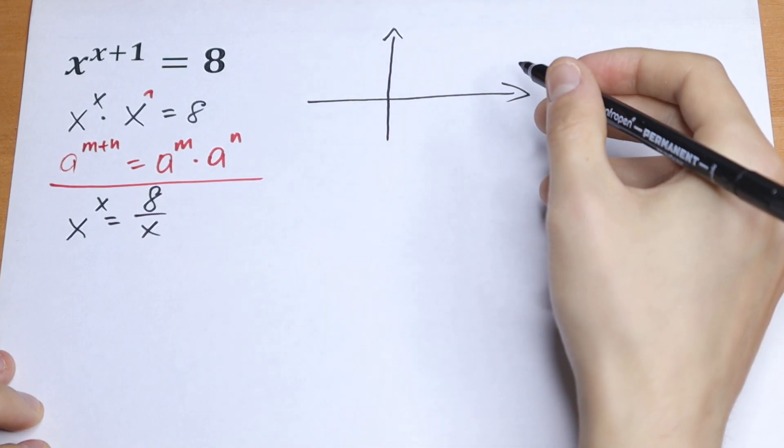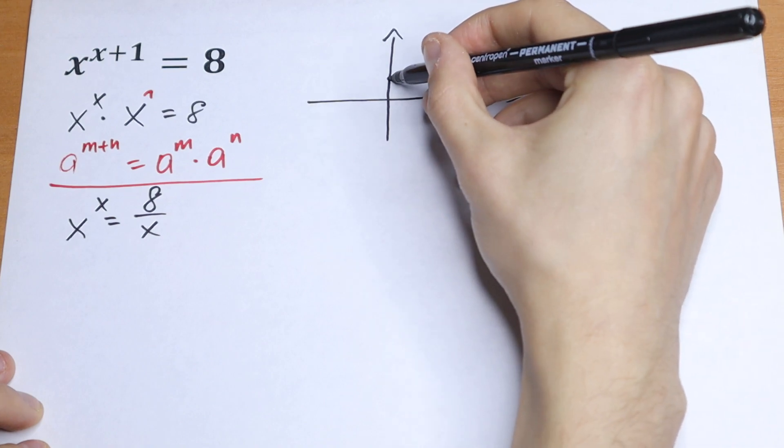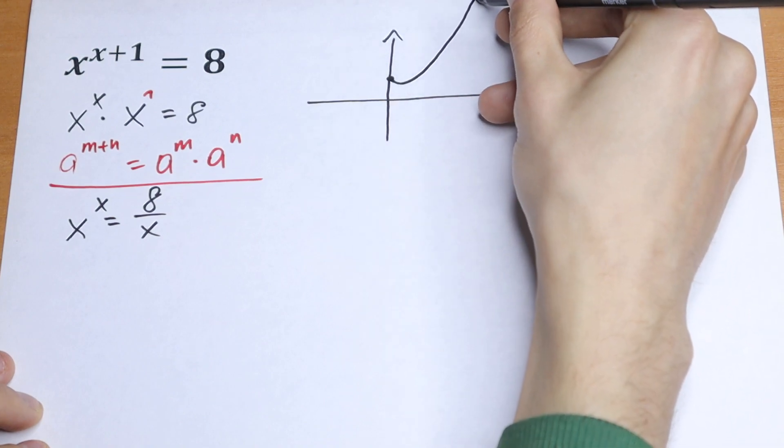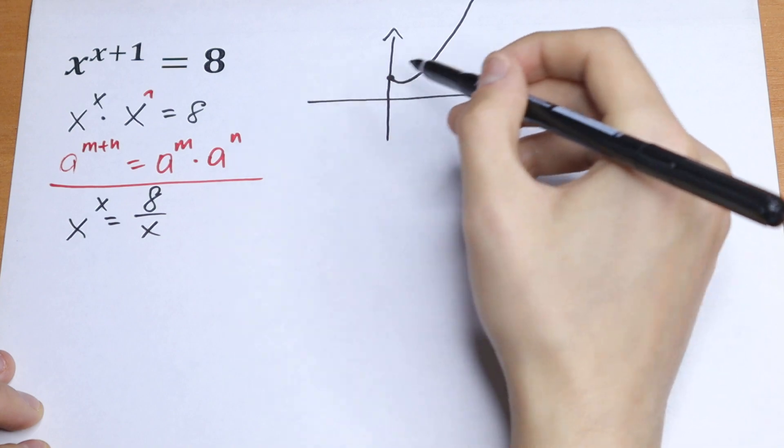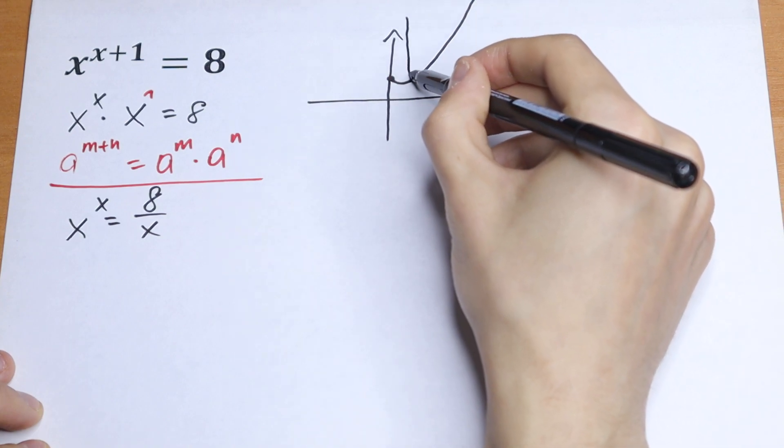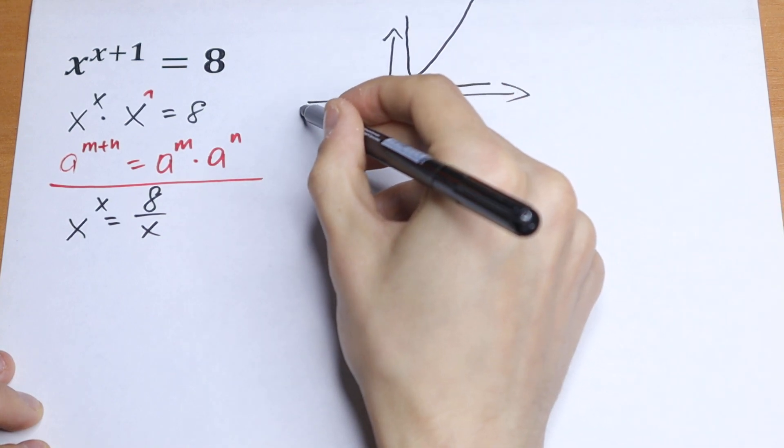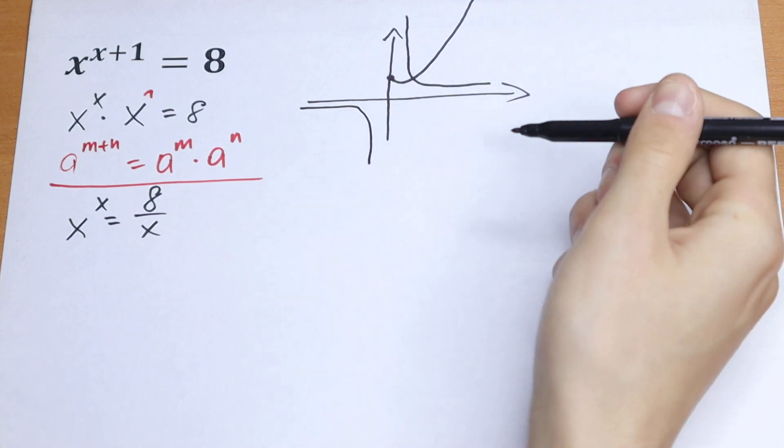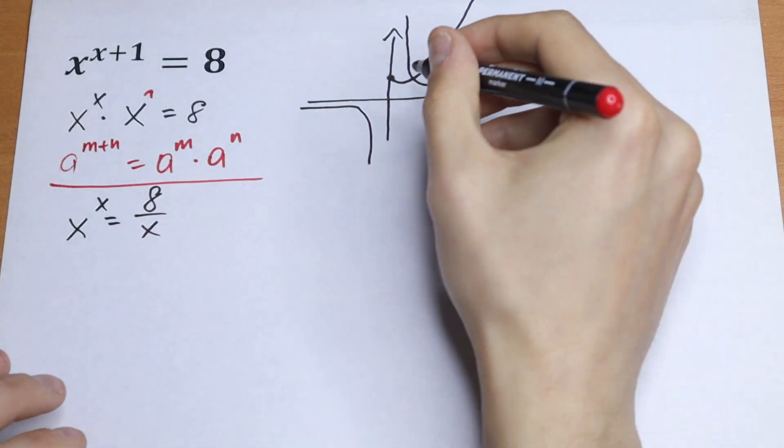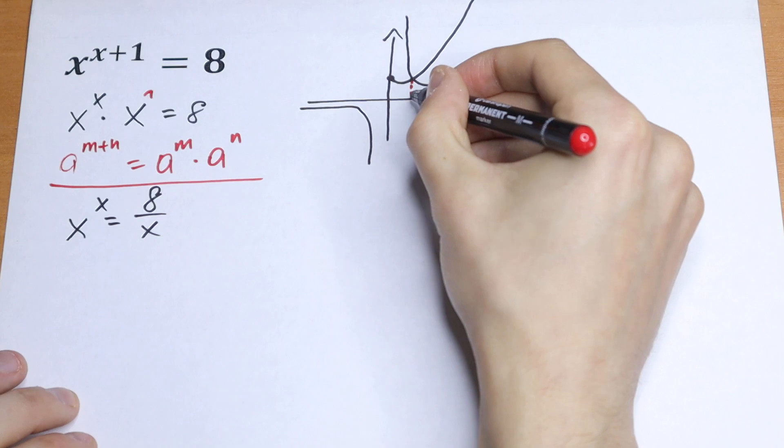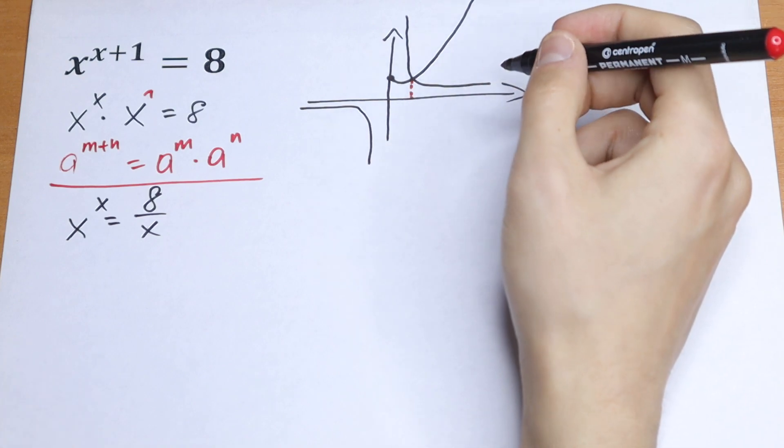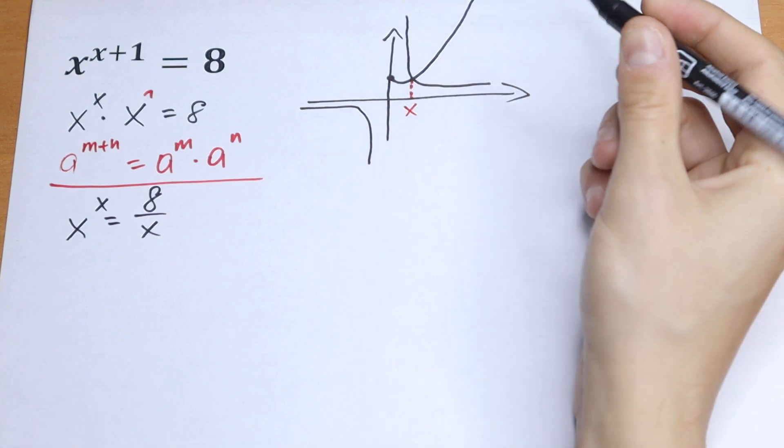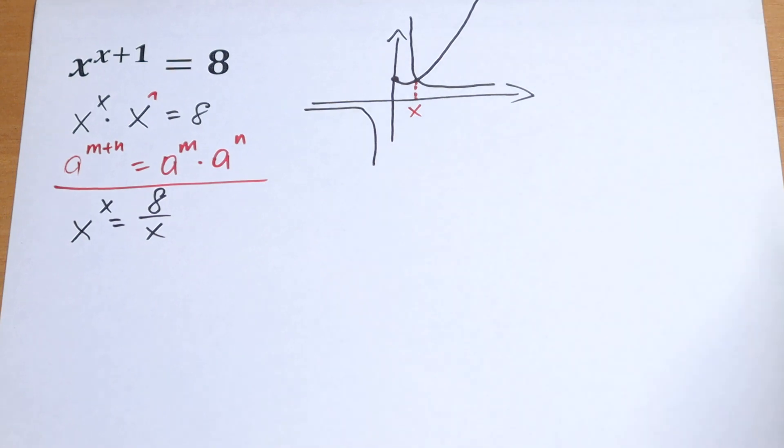x to the power x, it will be our branch like that. And 8 over x, it will be our hyperbola, right here. So as you can see, there will be one point of intersection. So our branches intersect only at one point, and this will be our x. But what this point will be?